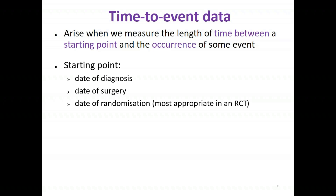Examples of starting points might be date of diagnosis of a particular disease, date of surgery, or date of randomisation — which is going to be the most appropriate starting point in a randomised control trial.